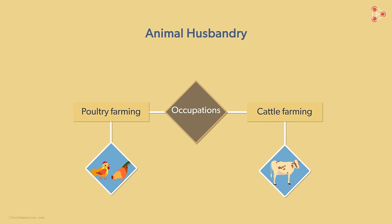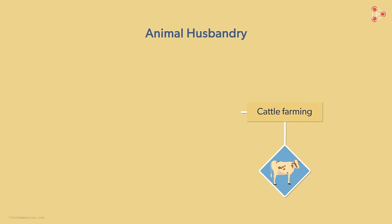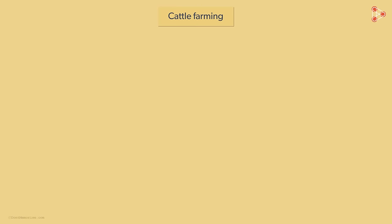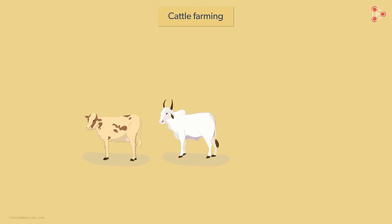In this lesson, we will look at cattle farming. Cattle include cows, bullocks, oxen, and bulls, which are the most common cattle.